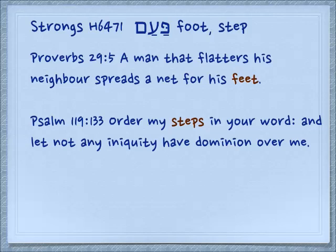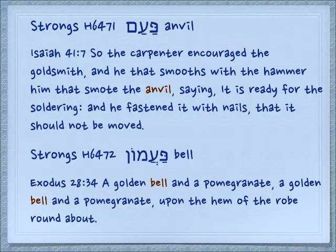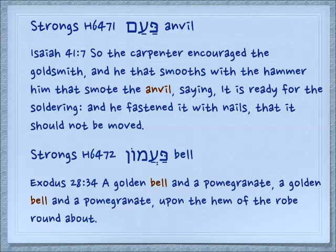Psalm 119:133: 'Order my steps in your word, and let not any iniquity have dominion over me.' Another idea attached to this word meaning an occurrence: we see it used once as the word 'anvil,' and you see the idea of striking an anvil — each time is an occurrence. Isaiah 41:7: 'So the carpenter encouraged the goldsmith, and he that smooths with the hammer him that smote the anvil, saying, it is ready for soldering. And he fastened it with nails that it should not be moved.'